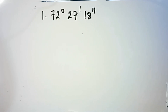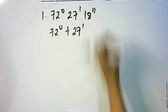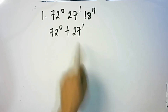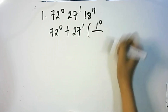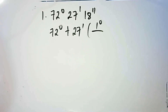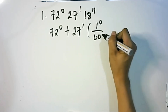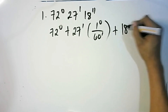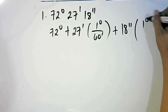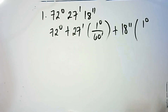To convert this DMS form into decimal degrees, first we copy 72 degrees, plus 27 minutes. We need to convert these minutes into degrees by multiplying by 1 degree over 60 minutes. Plus, we have 18 seconds multiplied by 1 degree over 3,600 seconds.